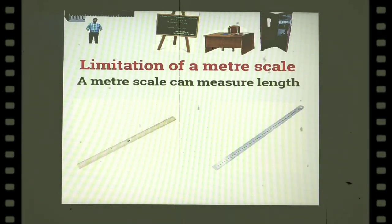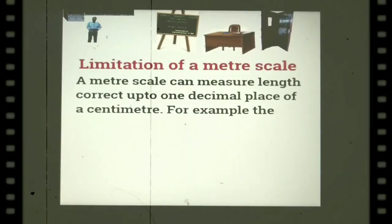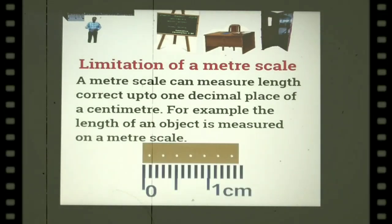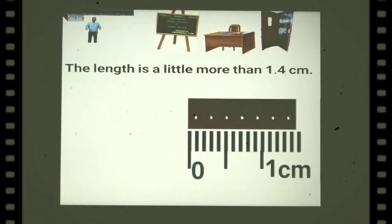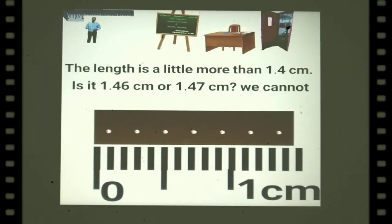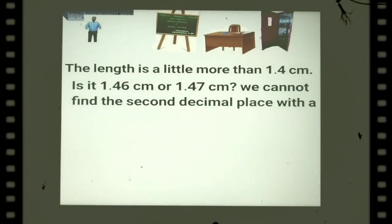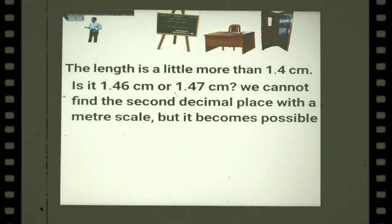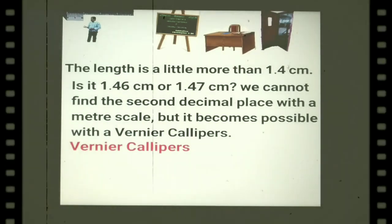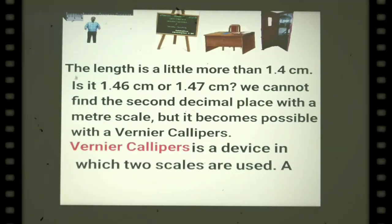Limitations of a meter scale: a meter scale can measure length correctly up to one decimal place of a centimeter. For example, the length of an object measured on a meter scale may appear a little more than 1.4 centimeter — is it 1.46 or 1.47 centimeter? We cannot find the second decimal place with a meter scale, but it becomes possible with a vernier calipers.